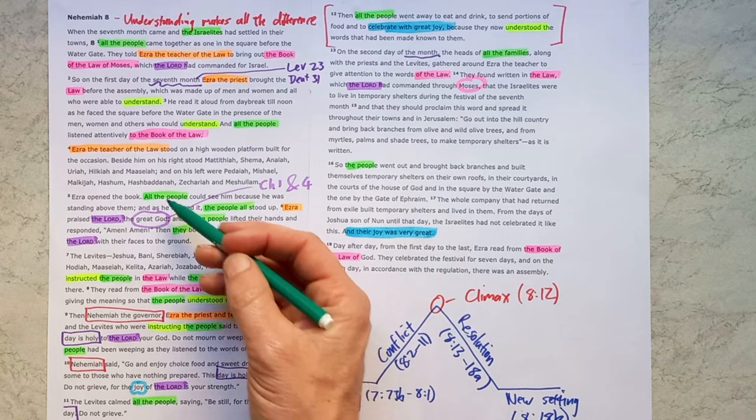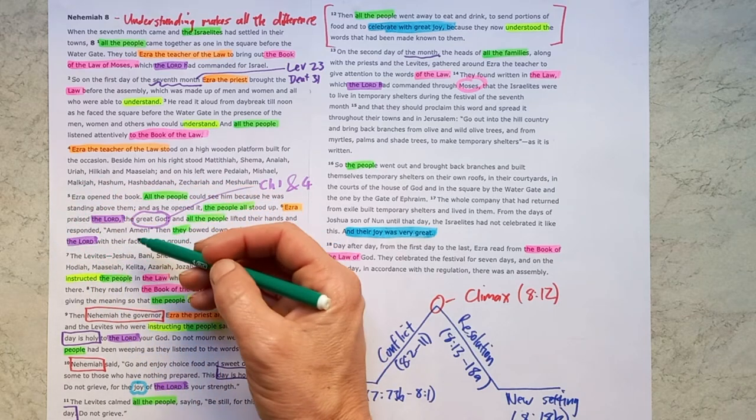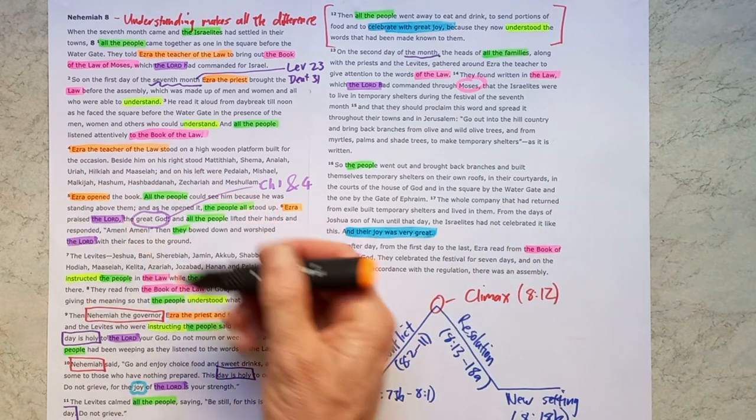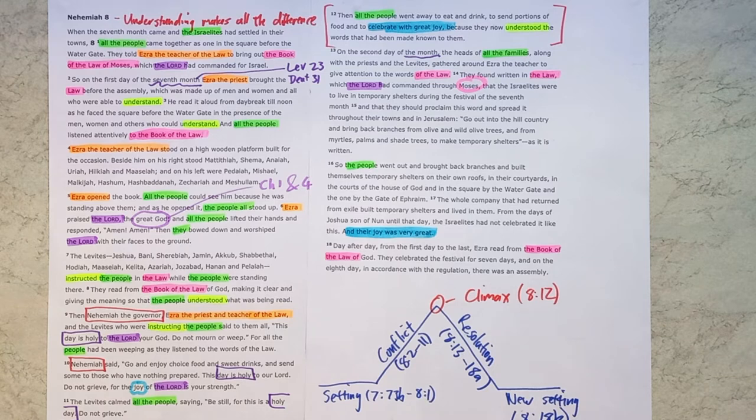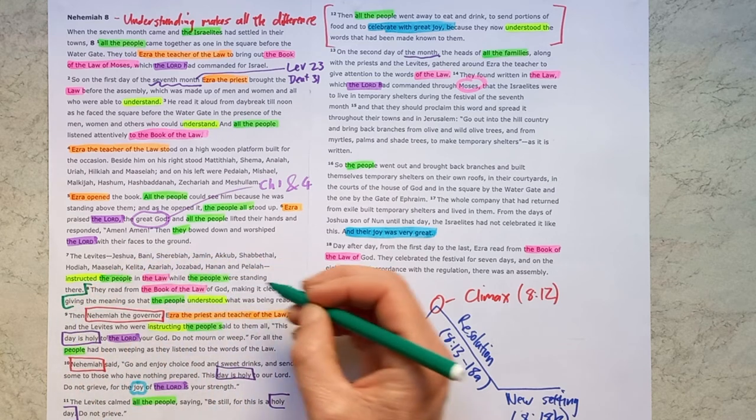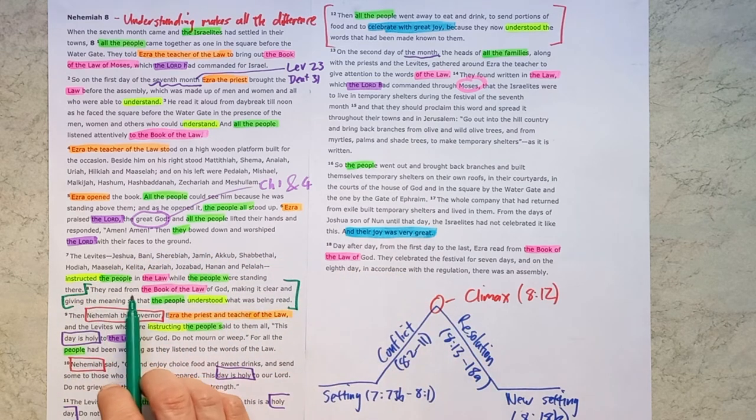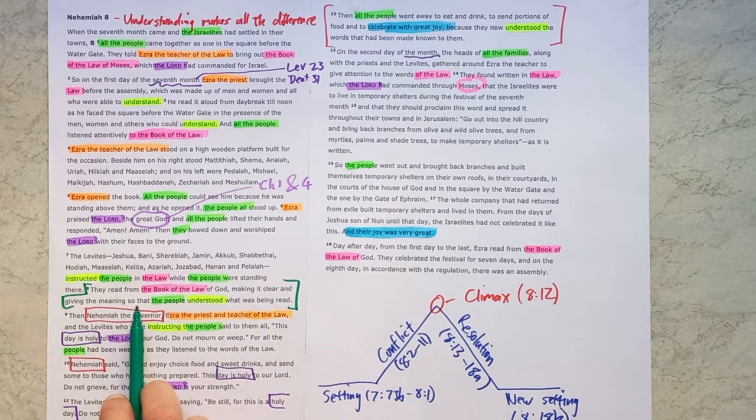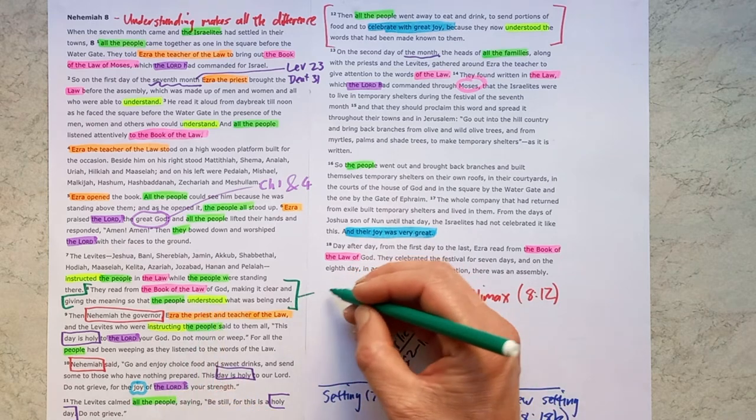But we see them as the law is being read. Ezra opens the book of the law, and all the people stand up, and they praise God together. They are really excited that now they are coming to this time when they're going to be taught God's word. Verse 8 is a really glorious verse that explains how they are being taught. They read from the book of the law of God, making it clear and giving the meaning so that the people understood what was being read. This is an explanation of expository preaching.